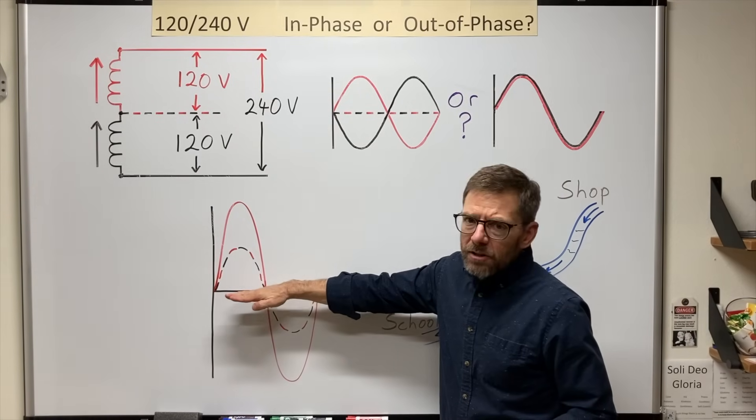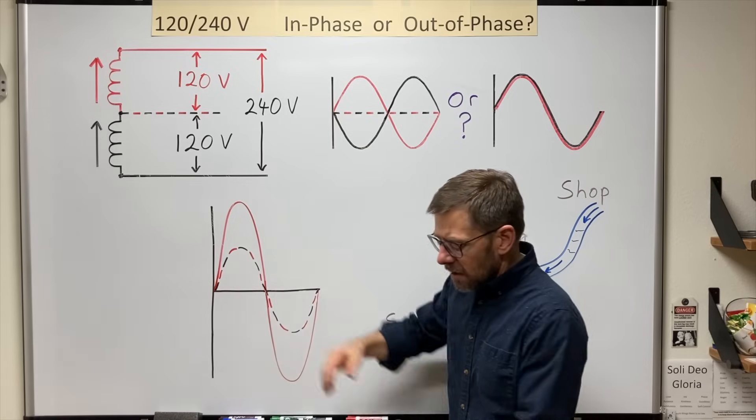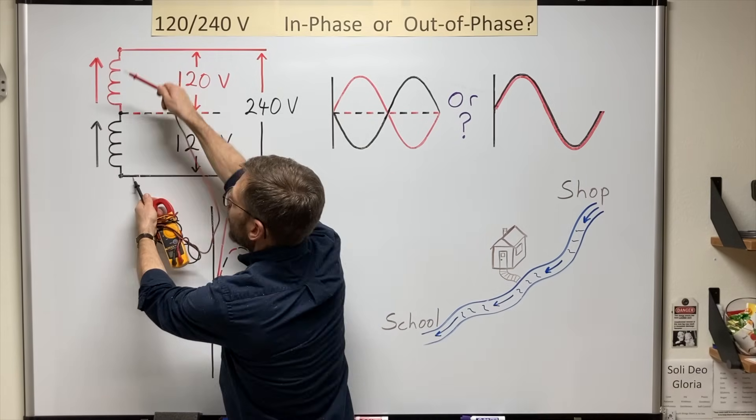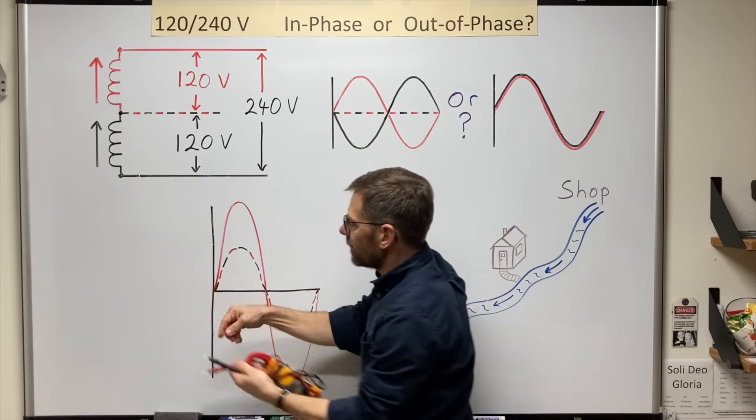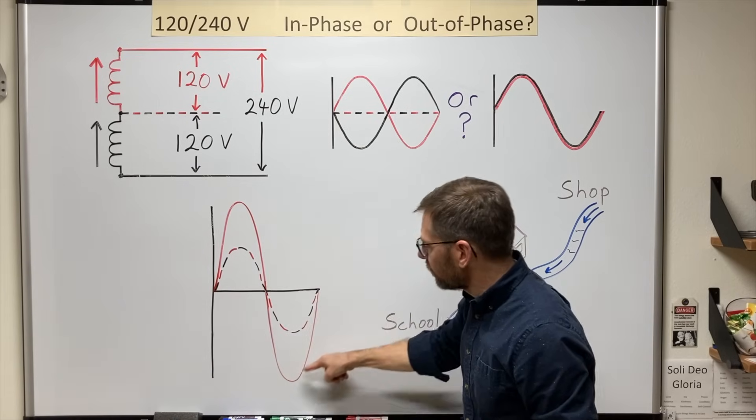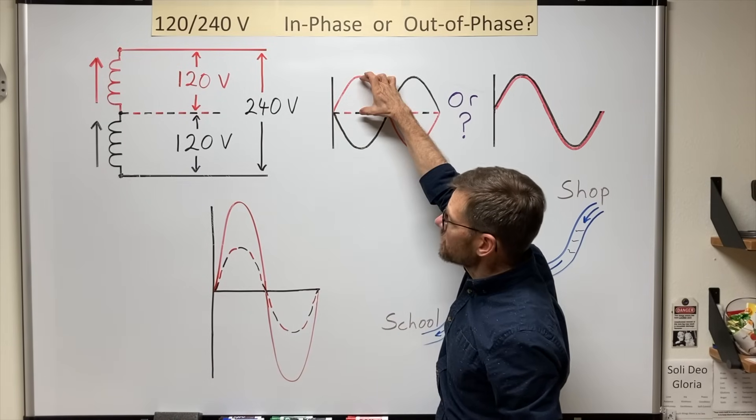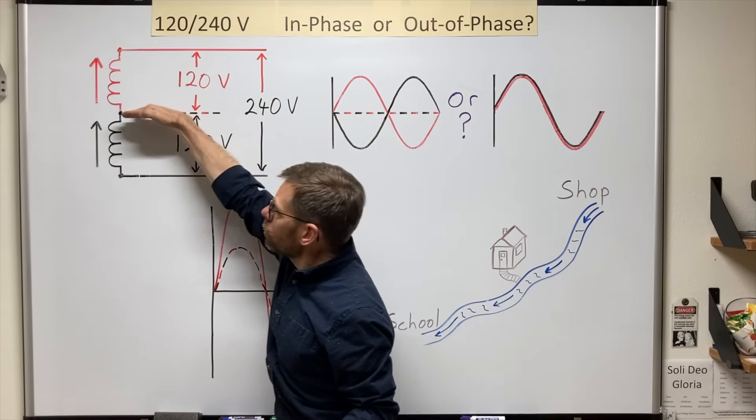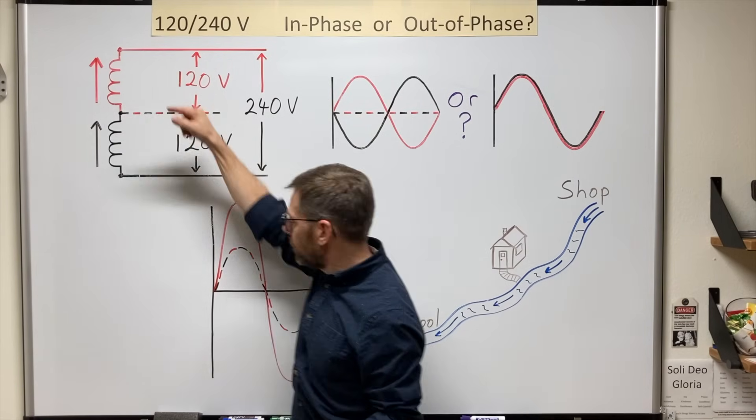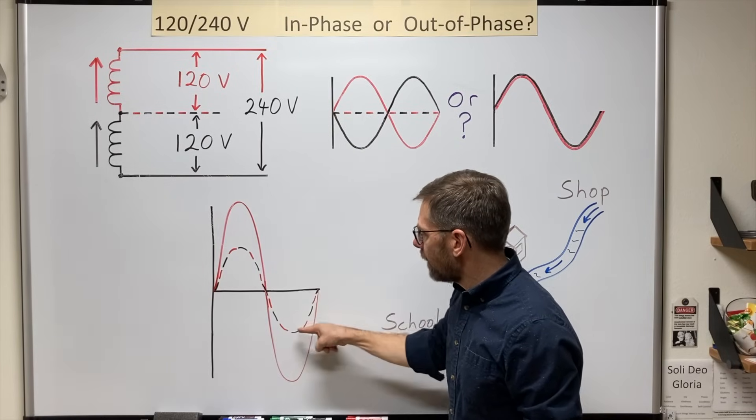Since the black wire is now my reference, I'm measuring from here up to the red. And so we've got a full 240-volt sine wave, twice as tall as this one. And because the neutral is right in the middle, halfway up, its sine wave is only going to reach halfway.